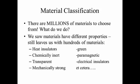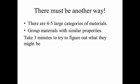But is going down to hundreds enough? There must be another way. Instead of having hundreds of material properties and classifications, there are actually four to five large categories of materials, all grouped together because they have very similar properties. Take three minutes now and try to figure out what these four or five large categories might be, and look around you for inspiration.